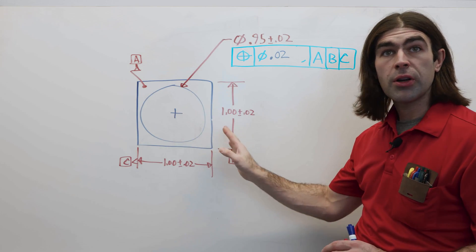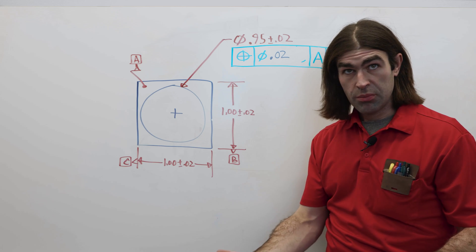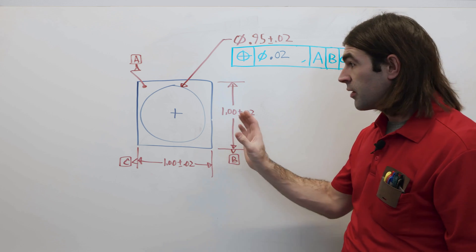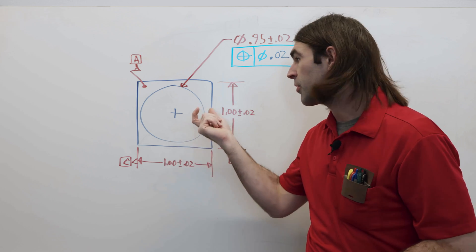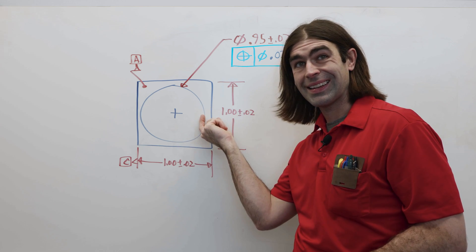I've got a part here. We've got a hole going through a block. The whole idea here is we want the hole to be as big as it can be without punching through the block. So, we're protecting this wall thickness.